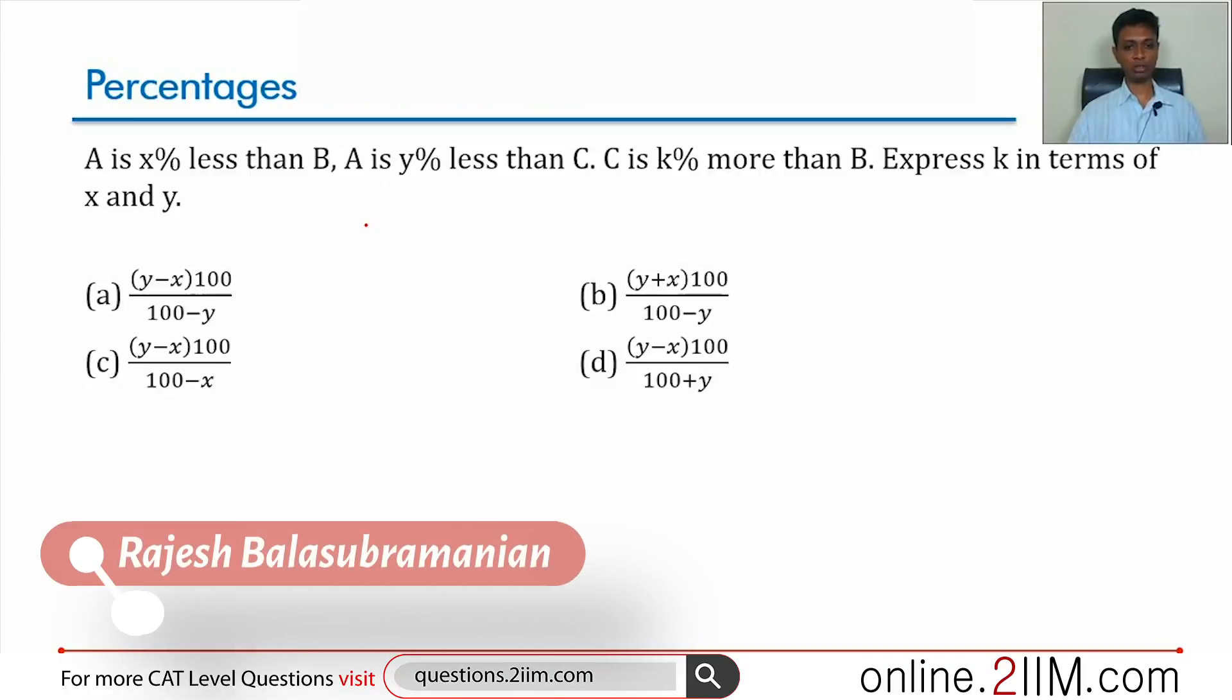A is x percent less than B, A is y percent less than C, C is k percent more than B. Express k in terms of x and y. This is merely a question to get some practice on how to manipulate algebraic expressions.